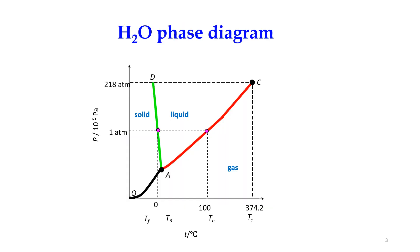Here we have the water phase diagram. For a typical water phase diagram, we also have the sublimation point curve, the melting point curve, and the vaporization point curve. As we go to the right, or increase the temperature, we see the transformation of solid to liquid and liquid to gas. The melting point curve is slightly tilted to the left, giving it a negative slope.